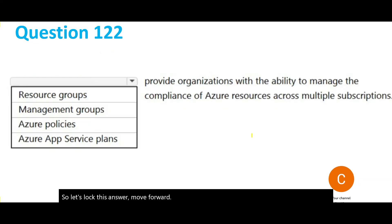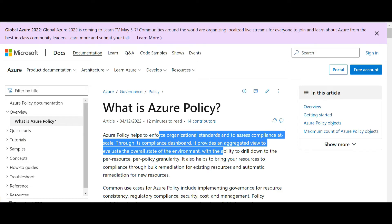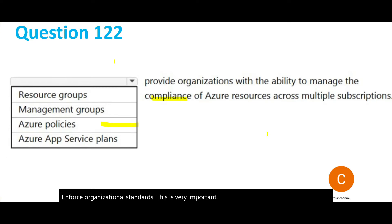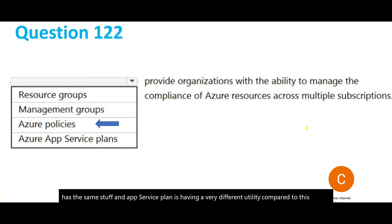Next question: which ones provide organizations the ability to manage compliance? Whenever you see compliance, the answer is either GDPR or Azure Policies, because Azure Policies can be used to enforce organizational standards. Resource groups are used for a different purpose — logically aligning resources. Management groups are similar, and App Service Plan is used in a microservice-based environment. Azure Policies is the final answer.